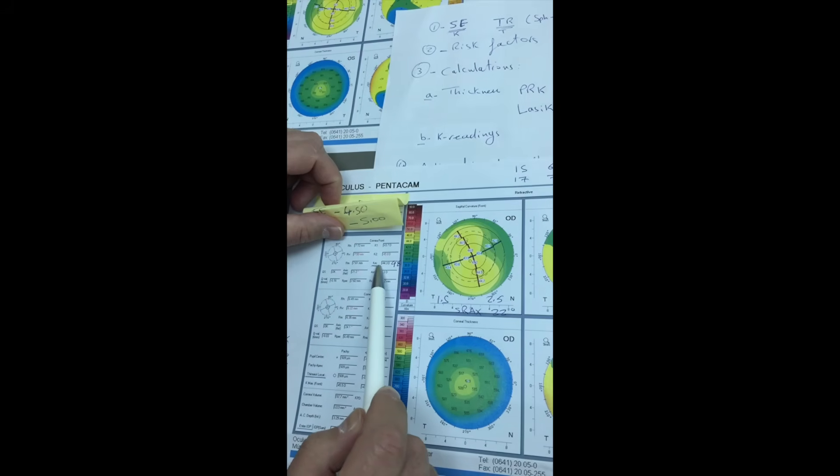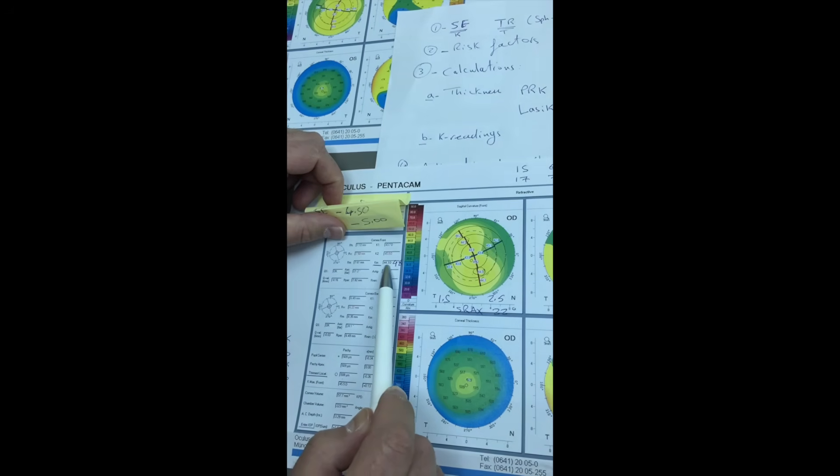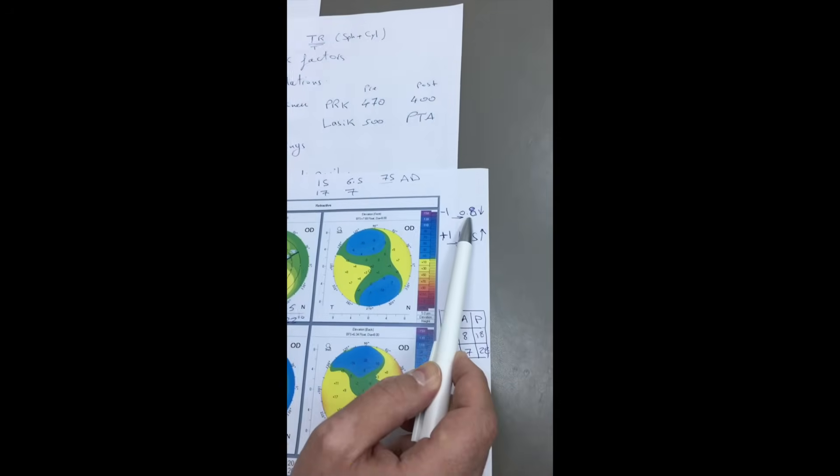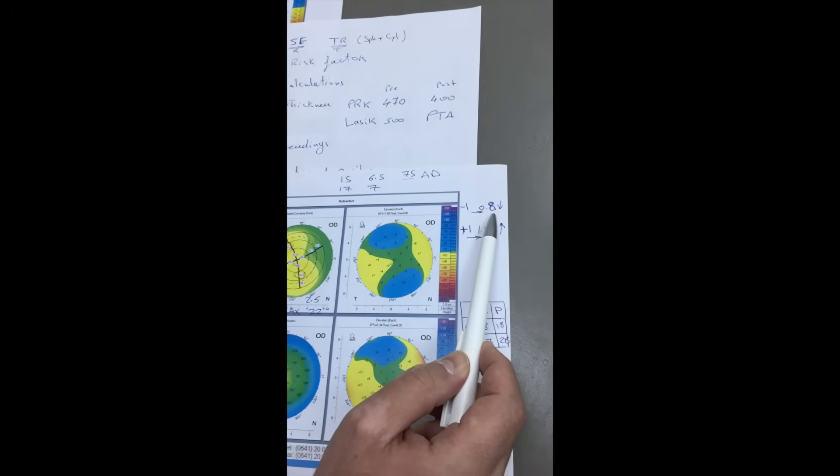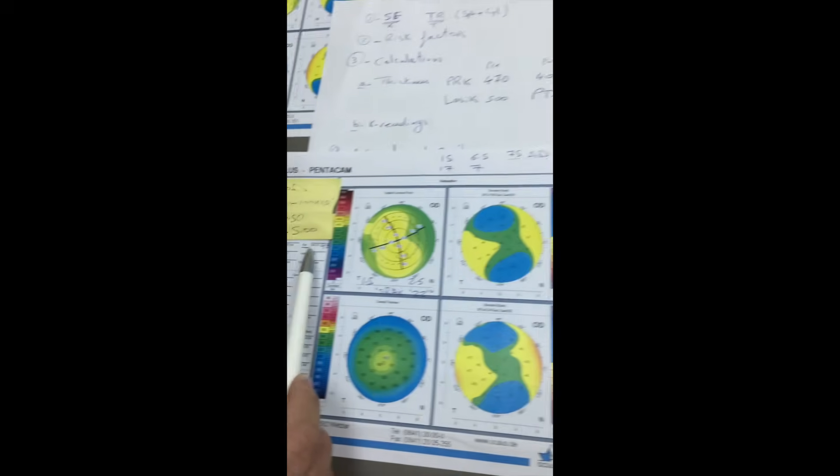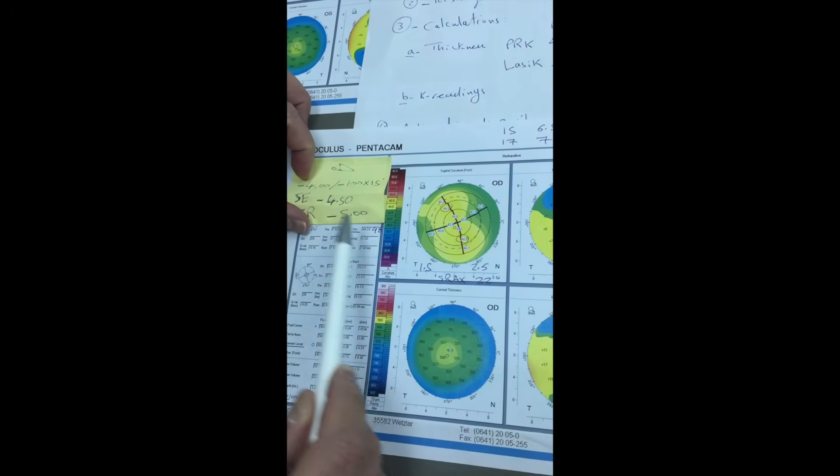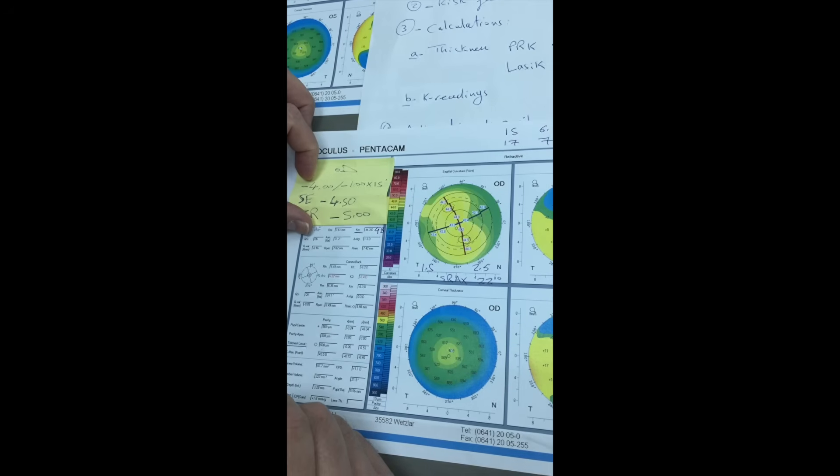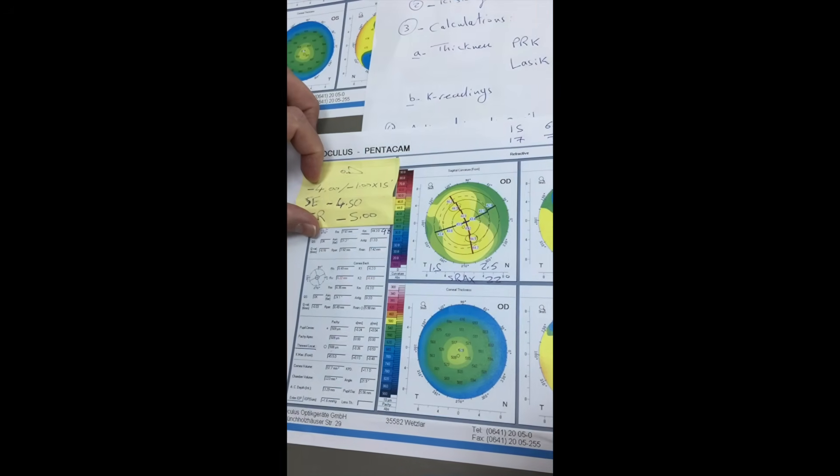In this case, we have the KM is 44.3. And if we multiply the 4.5 by the 0.8, it will be almost 3.6. We will deduct the 3.6 from the 44.3. And the cutoff point for the myopic ablation is 34 diopters. And the cutoff point for the hyperopic ablation is 49.